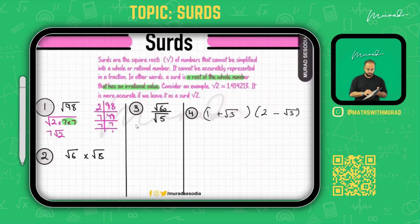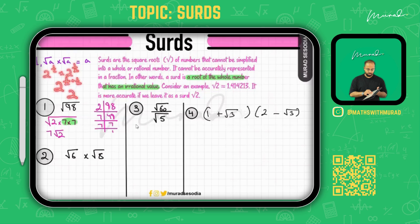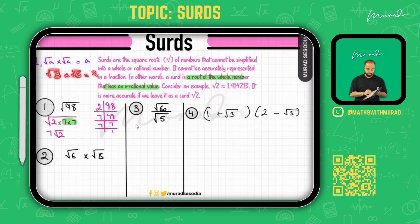Before moving to example two, remember these basic rules. Rule one: whenever you have the exact same number inside a square root multiplied by itself, the answer is that number — for example, √2 × √2 = 2, and √3 × √3 = 3.